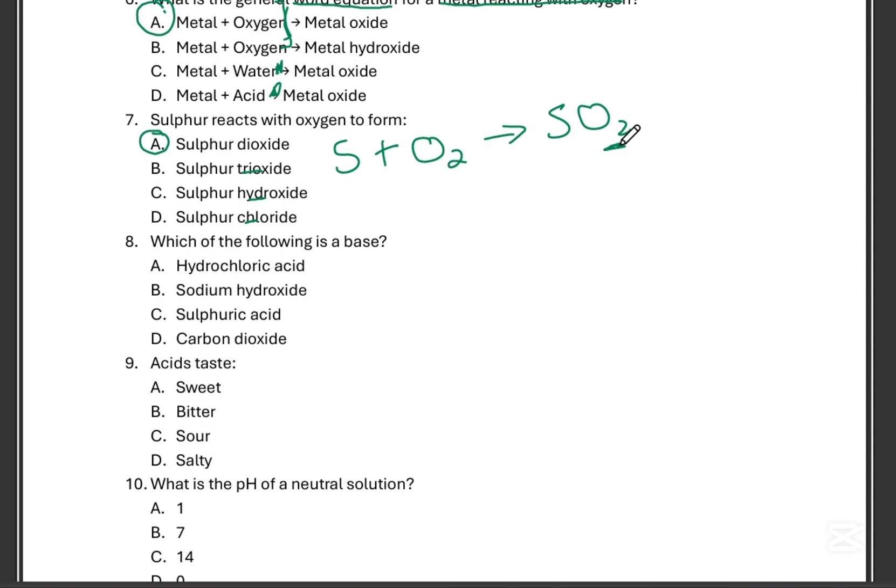Which of the following is a base? Is it hydrochloric acid, sodium hydroxide, sulfuric acid, or carbon dioxide? Sodium hydroxide. And I'll write you the chemical formula now. N, A for sodium hydroxide, that would be O, H.